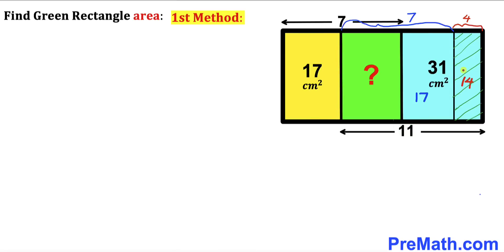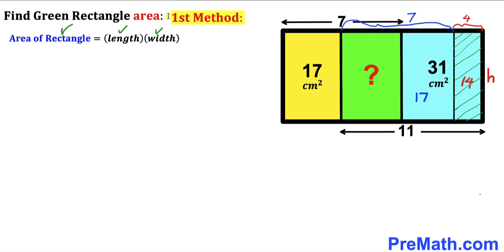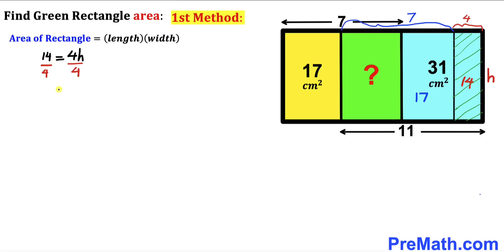So this tiny distance is 11 minus 7, which gives us 4 cm. Let's focus on this tiny rectangle on the right-hand side and assume its height is lowercase h. Using the area formula — area equals length times width — its area is 14 and its dimensions are 4 and h. So 14 = 4 × h. Dividing both sides by 4, h = 7/2 cm.